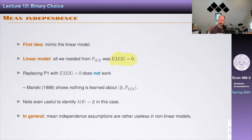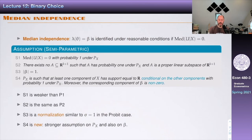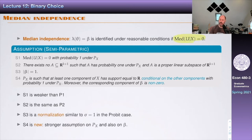An alternative to assuming E[U|X] = 0 is to assume that the median of U conditional on X is zero — this is called median independence. What you can show is that under median independence, beta is identified as a feature of theta under reasonable conditions. Median independence is enough to identify a linear index model in a semi-parametric case, without assuming any actual distribution for U conditional on X.